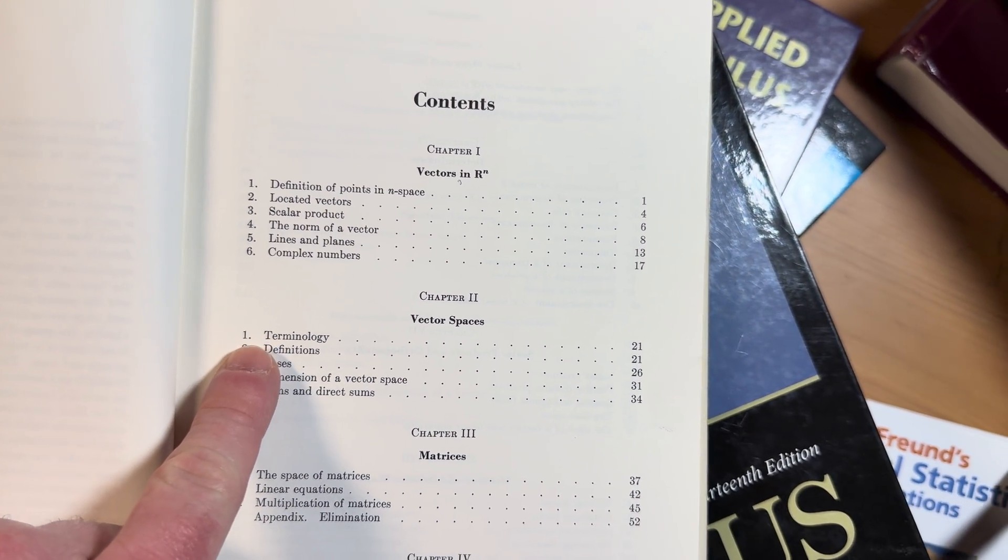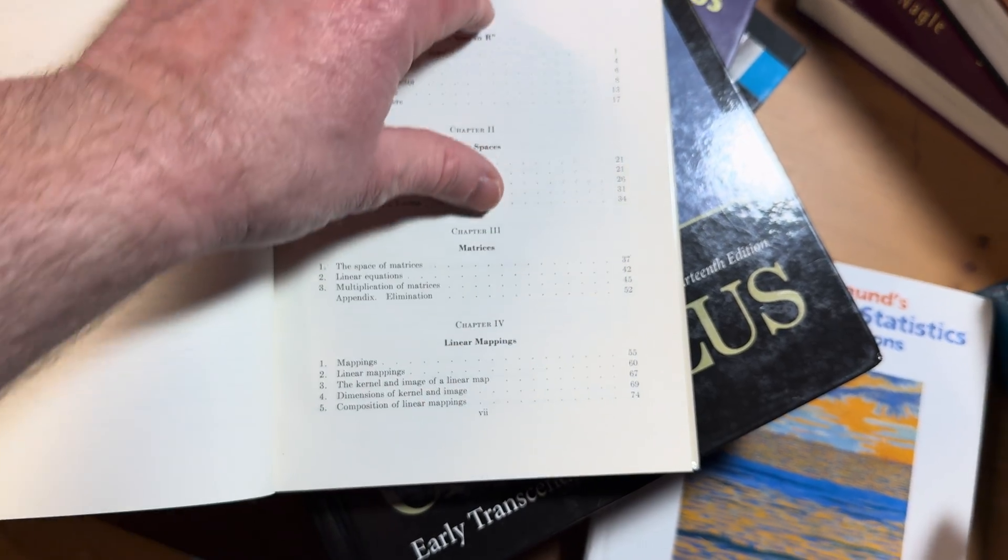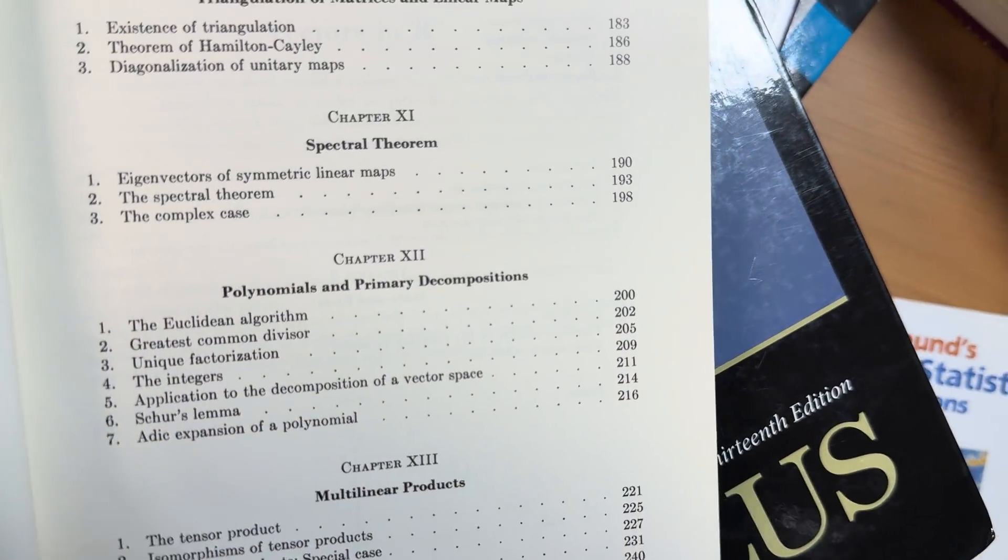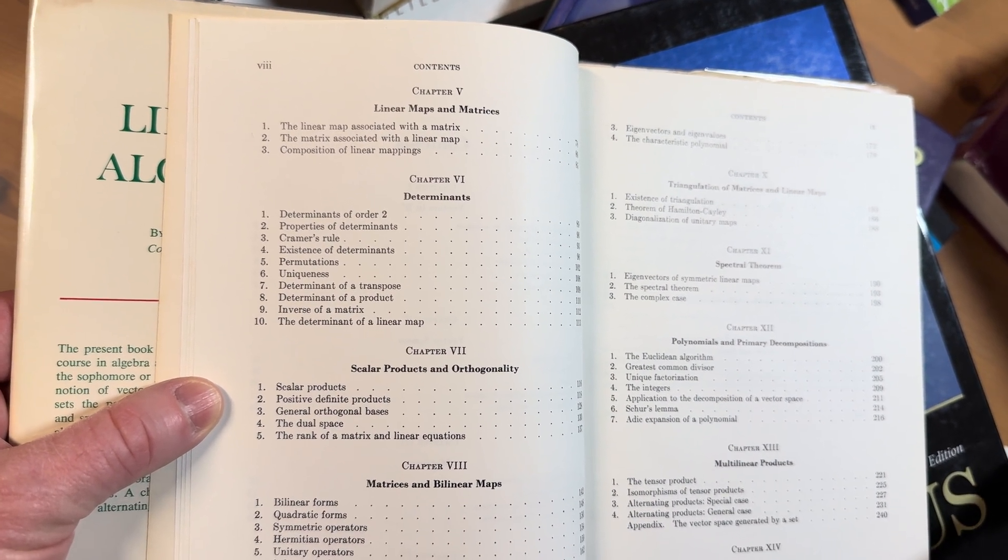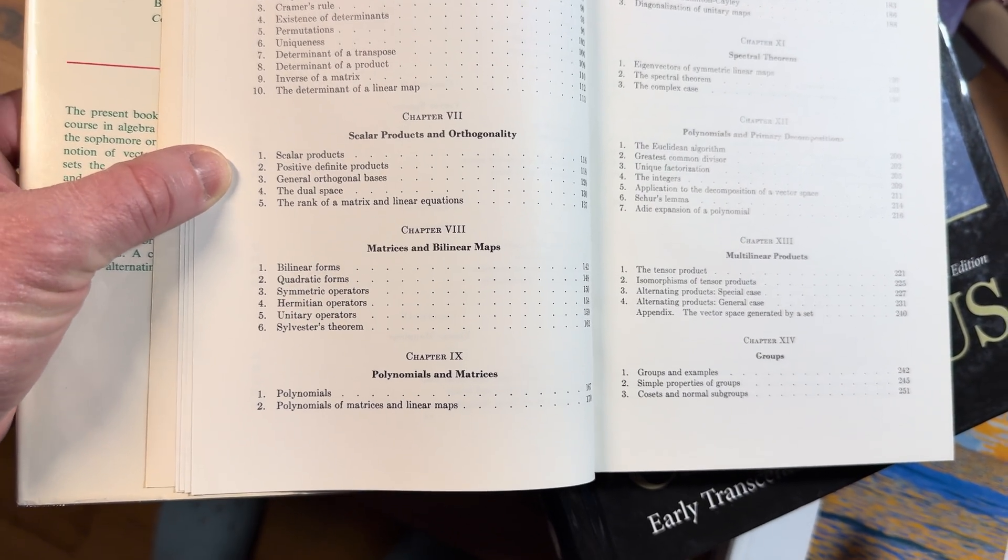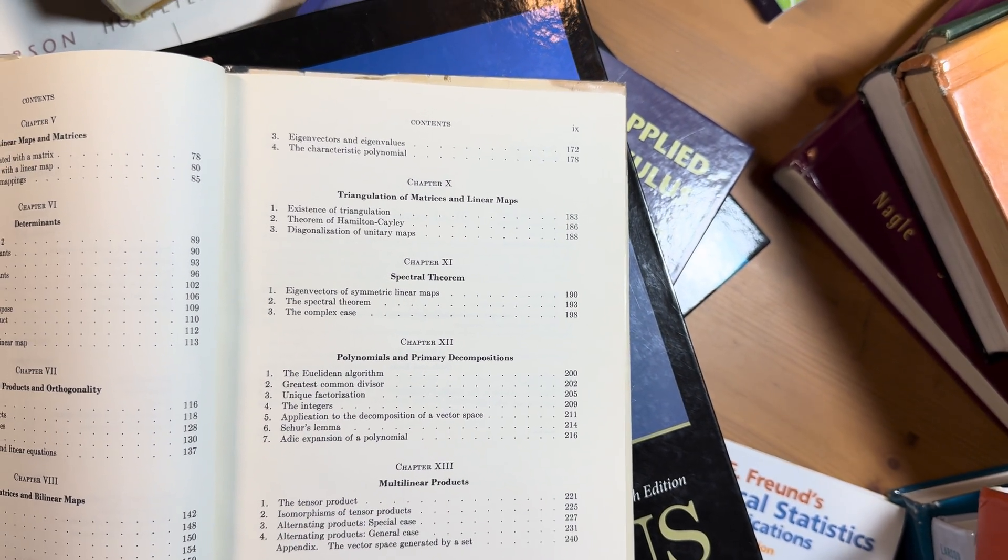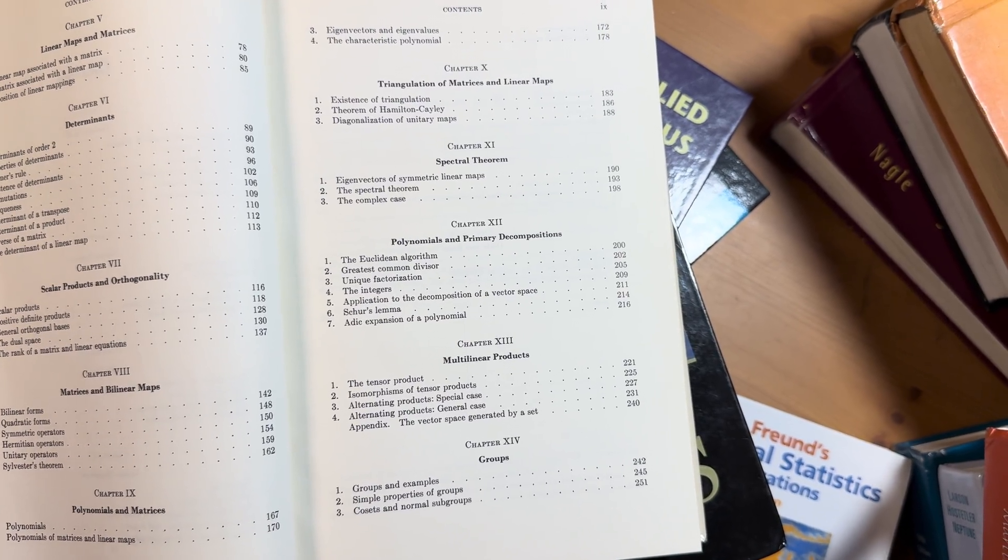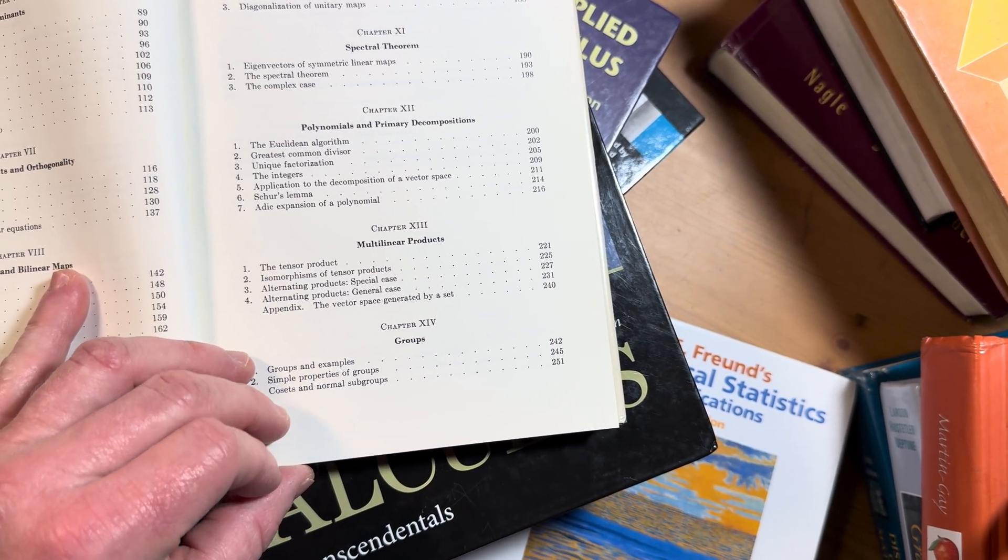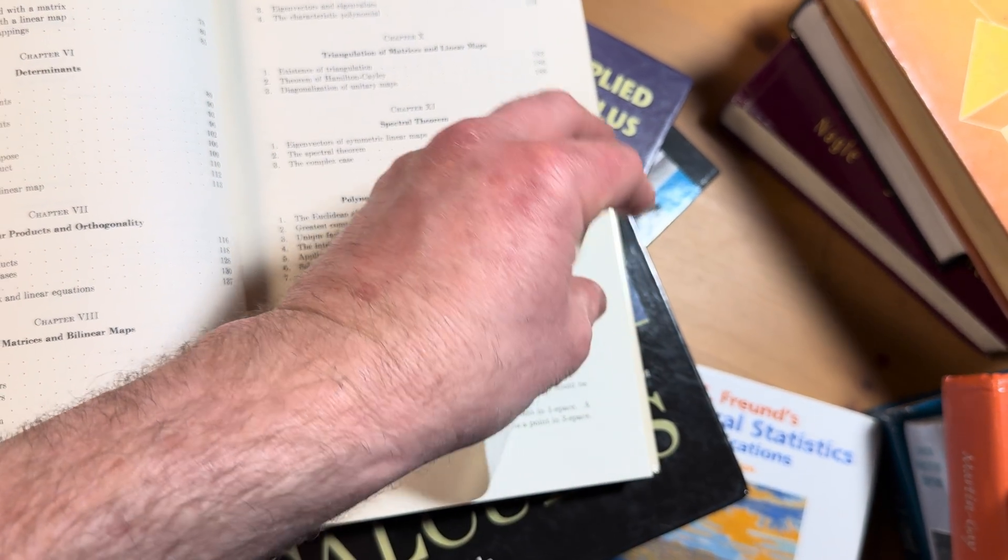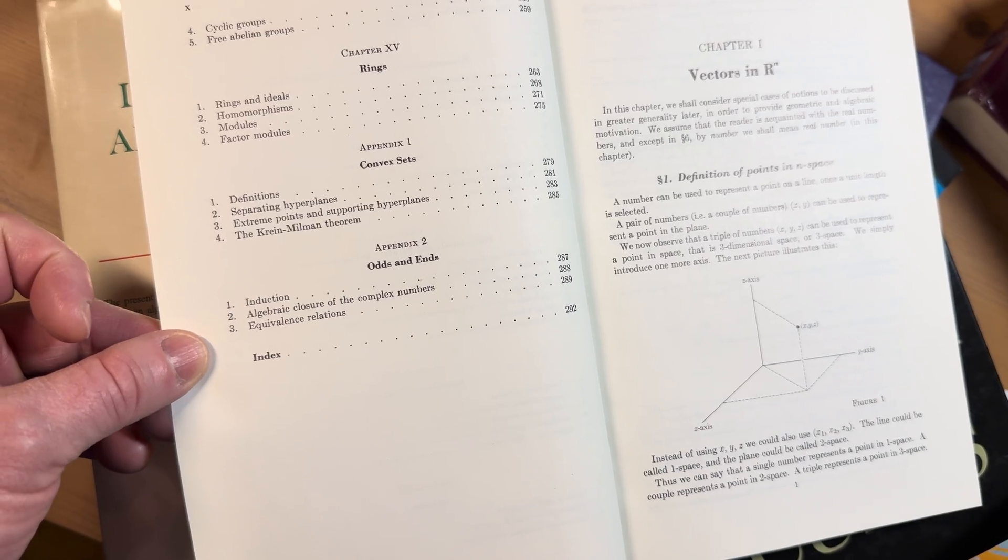So it starts with vectors, and then vector spaces right away, then matrices, and then he does linear mappings. The book smells amazing. Linear maps and matrices, determinants, scalar products and orthogonality, and then matrices and bilinear maps. Polynomials and matrices, triangulation of matrices and linear maps, spectral theorem, polynomials and primary decompositions, multilinear products, groups. So that's not something you typically see in a linear algebra book. Rings, we should look at that. Convex sets, odds and ends.